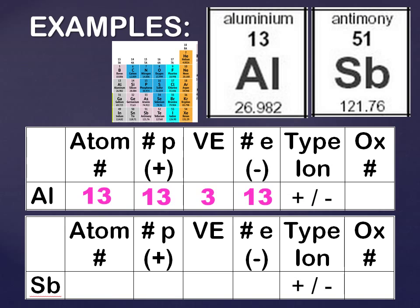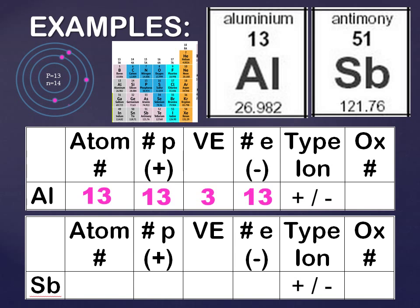Now we're going to talk about type of ion. We'll review the Bohr model for aluminum. We put the protons and neutrons inside the nucleus, and then put 13 electrons on there. Two electrons go on the first ring, 8 on the second ring — that's 10 total. We have 13, so we put 3 more on the outer ring. Remember, our valence electrons are those found in that outer ring.